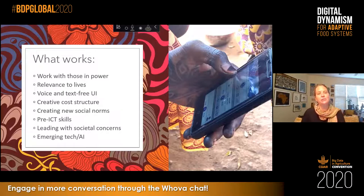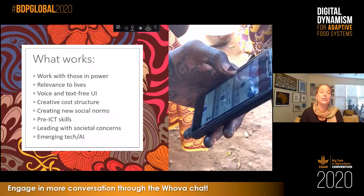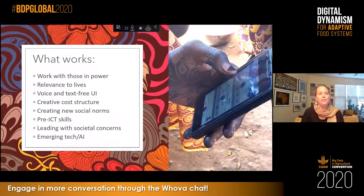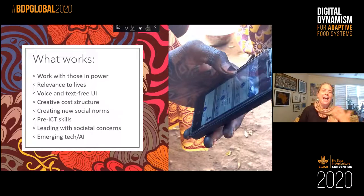We have to create compelling use cases so that people who don't want women online can see the benefit. For example, there's a text-free user interface — a social network created for very low literacy women in Bamako slums — to build a health-based social network so that their husbands and families say 'absolutely, we see benefit to you having that.' You have to co-create with the community, the naysayers, the power brokers, and the women end users themselves to come up with programs that truly enable women to safely and accessibly use technology.